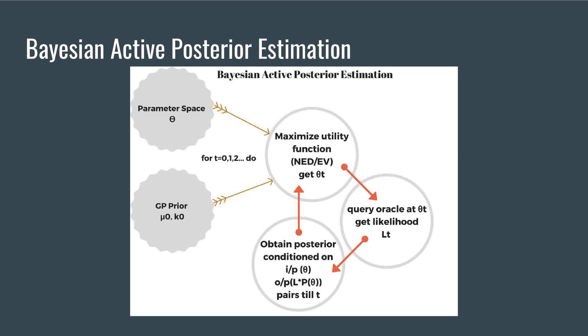The infographic illustrates the working of the algorithm. A GP for the log joint probability of parameters and the observations is initialized with prior mu zero and k zero. At time t, a new point from parameter space which maximizes a utility function is sampled. A likelihood at this point is obtained and subsequently the posterior is estimated.